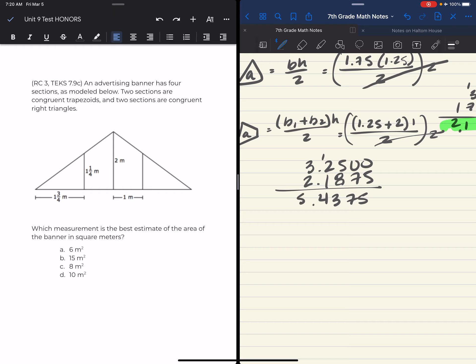All right, I got five and some change. Which measurement is the best estimate of the area of the banner in square meters? I'm going to go with answer choice A: six.